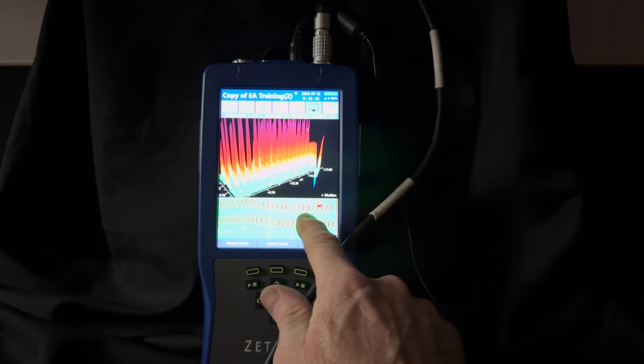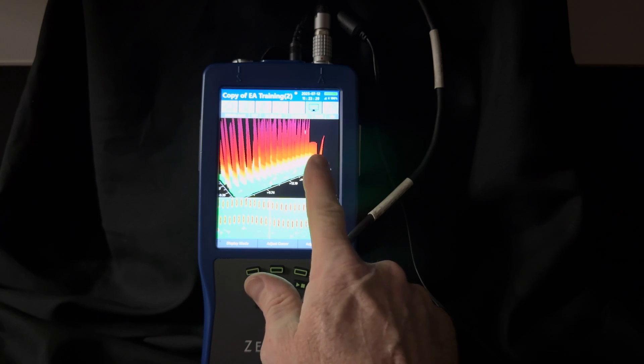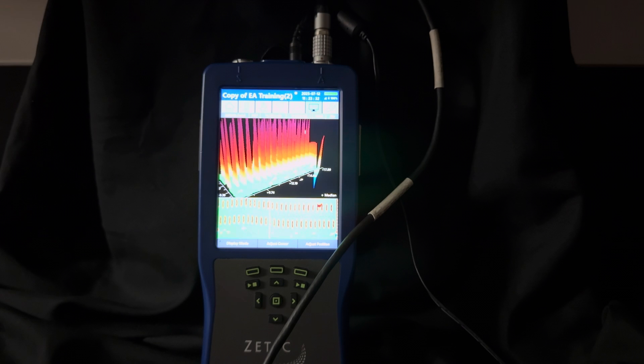In your training for eddy current testing and data analysis, you may have heard the term high repetition signals. If you were doing a tubing exam, tube support plates would be high repetition signals. That means they happen often.